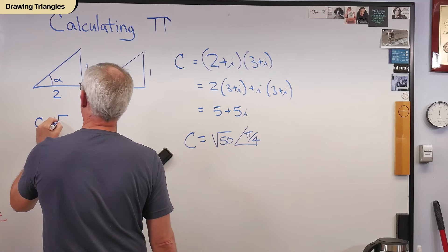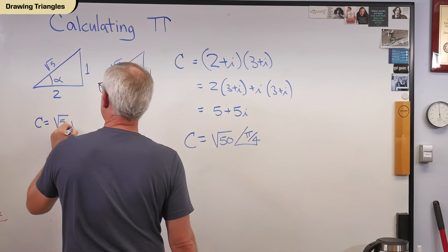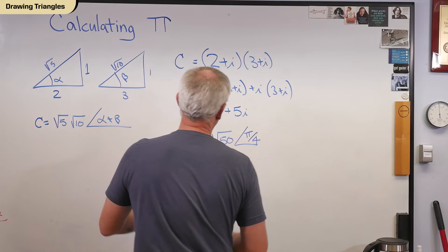So that means c is the square root of 5, because that's the magnitude here, and this one's the square root of 10, times the square root of 10, times alpha plus beta. Well, that means alpha plus beta is pi over 4.